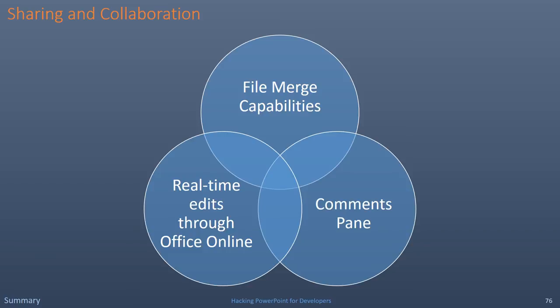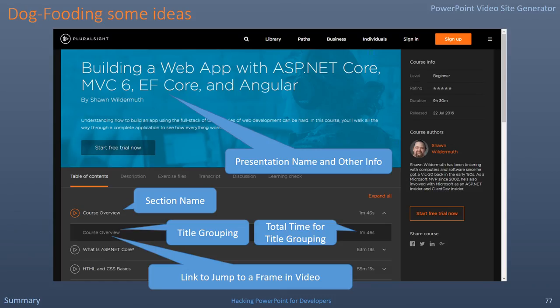In summary, sharing and collaboration has improved. There are file merge capabilities which should lead to better version control, a comments pane for collaboration, and real-time edits through Office Online. Here are some ideas that I'm dogfooding — things I've been hacking together. The first is a PowerPoint video site generator, something like you would experience on Pluralsight.com but with video on YouTube or Vimeo, based on certain conventions in PowerPoint like using sections and keeping titles a certain name to create a title grouping. I'm also toying with the idea of a PowerPoint markdown editor — it would be nice to have something that could take my text and generate some slides, leading to a PowerPoint static site generator or even a WordPress add-in for publishing blog posts.